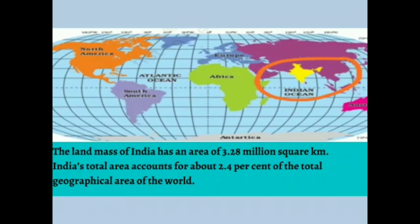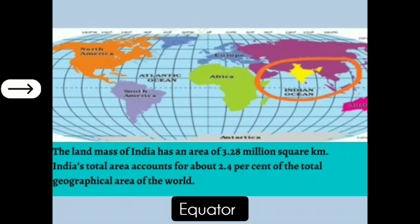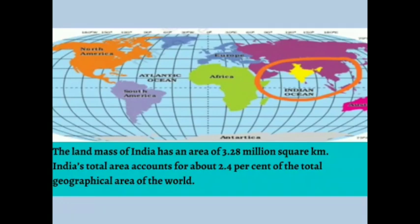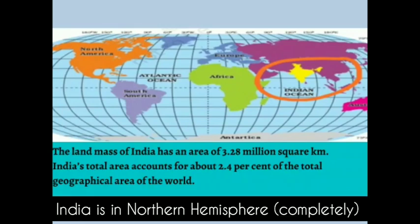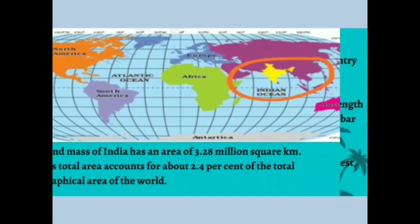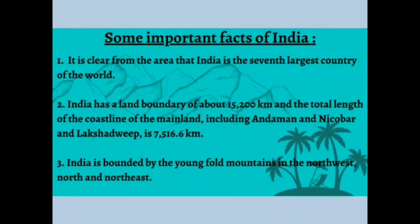In this map we can see a dotted line starting from left to right — this is called the equator, which divides our earth into two equal parts: the northern hemisphere and the southern hemisphere. Most countries are in the northern hemisphere; only a few are in the southern hemisphere. India completely lies in the northern hemisphere, that is, above the equator.